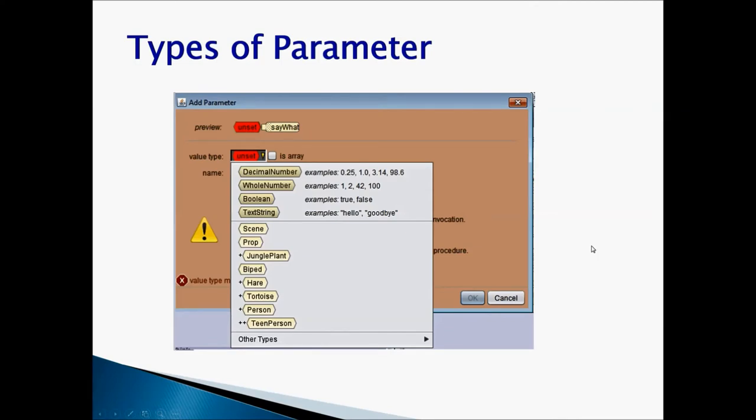When we talk about parameter, parameter will have a type. That means what kind of value it needs to store. And if you take a look at my example in here, the basic four types of value would be a decimal number. Example 0.25, 1.0, 3.14, 98.6. You can also have the type of parameter as a whole number. Examples are 1, 2, 42, 100. You can also have the type as Boolean. Boolean means true or false, yes or no. You can also have the type as text string. Sometimes you want to say hello, goodbye, or an object is saying something. So that would be a string.